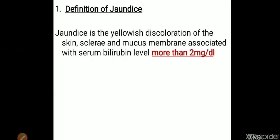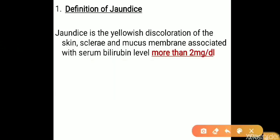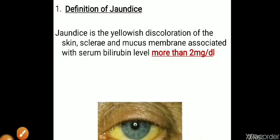Regarding the first topic, that is definition of jaundice — to define jaundice, the plasma bilirubin level should be more than 2 mg per deciliter. If the plasma bilirubin level is more than 2 mg per deciliter, that bilirubin diffuses into the surrounding connective tissues, producing yellowish discoloration of skin, sclera, and mucous membrane.